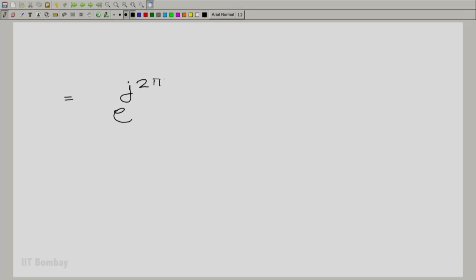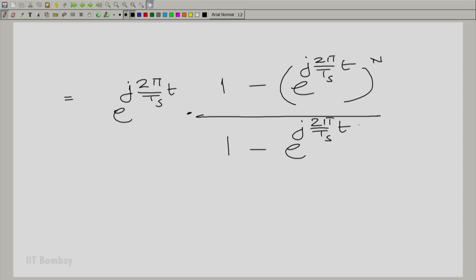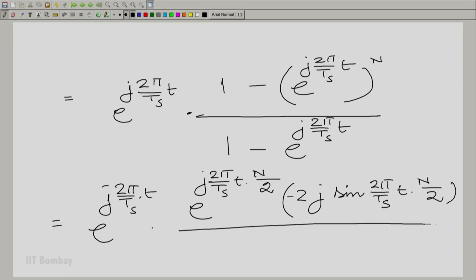So, the first term multiplied by 1 minus e^(common ratio to power n) divided by 1 minus the common ratio. Now, we can take e^(2π/t_s t n/2) common. And the numerator that leaves us with 2j sin and the same argument. The same trick can be applied in the denominator, extracting 2j sin(2π/t_s t/2).